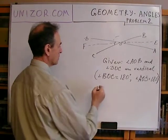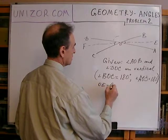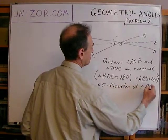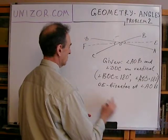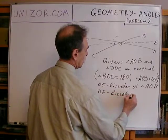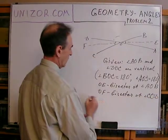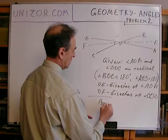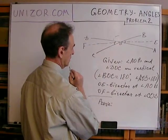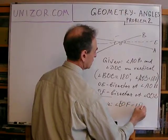And also given that OE is bisector of angle AOD and OF is bisector of angle COD. All right, what's necessary to prove that angle EOF equals 180 degrees?